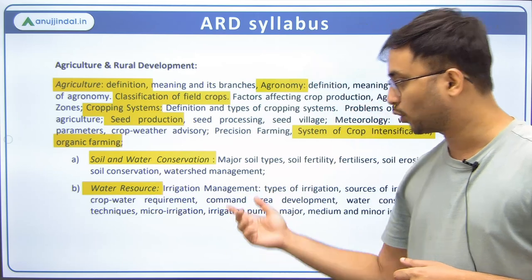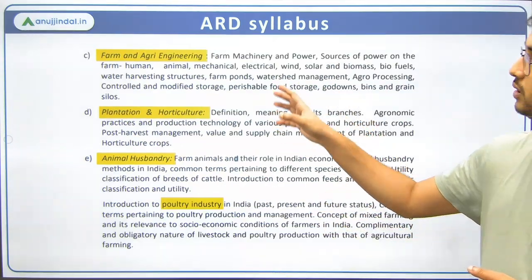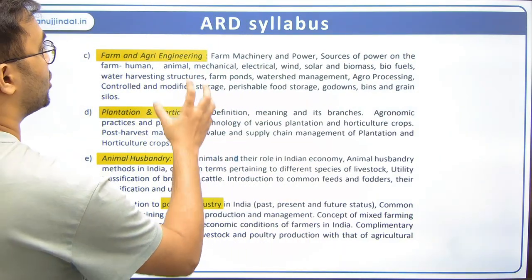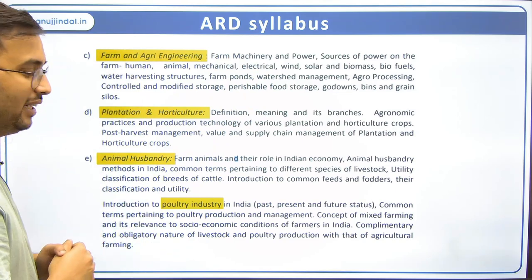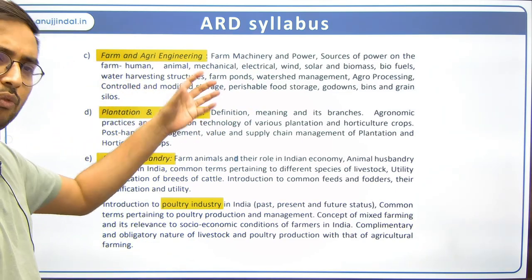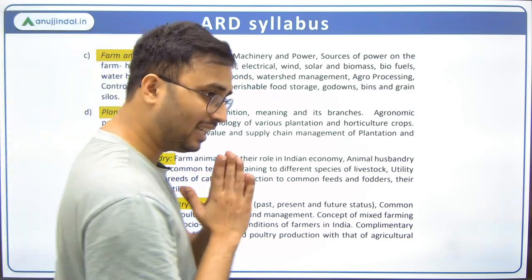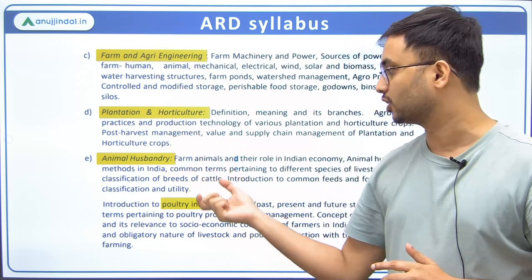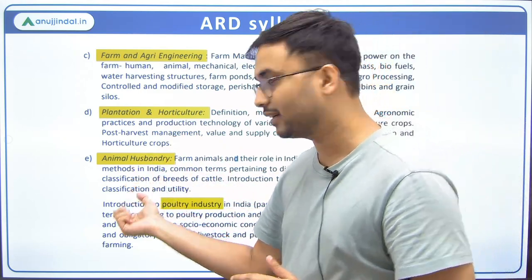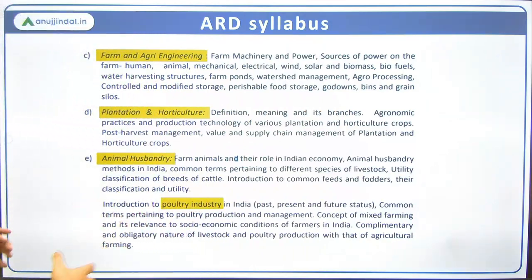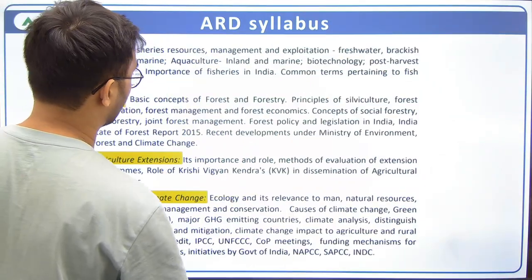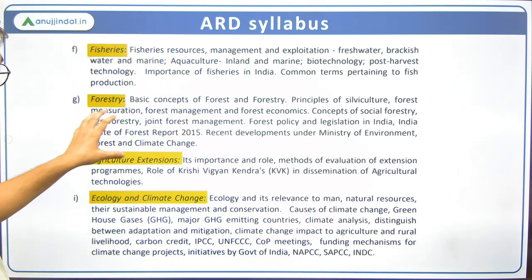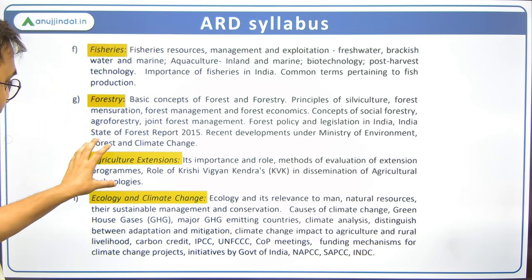Next is farm and agri-engineering, covering all the technical aspects and machinery used in agricultural activities. Then comes plantation and horticulture — a very important chapter as it's one of the main sub-branches under agriculture. Then animal husbandry and livestock, including poultry. After that comes fisheries, then forestry, and then agricultural extension.